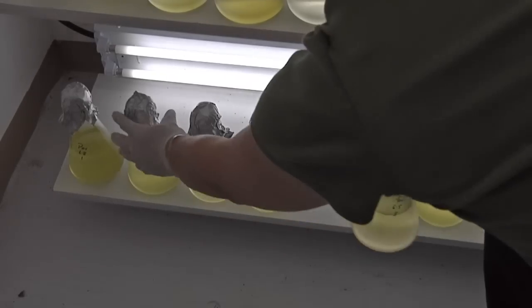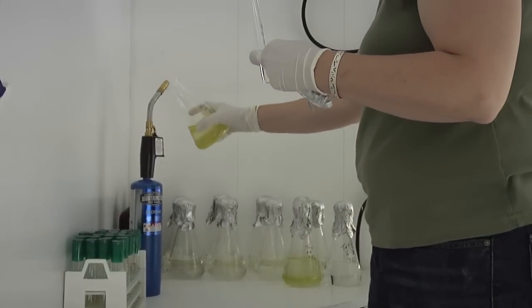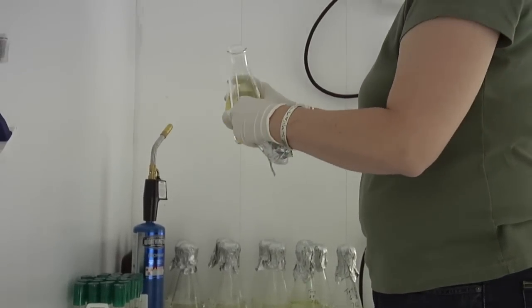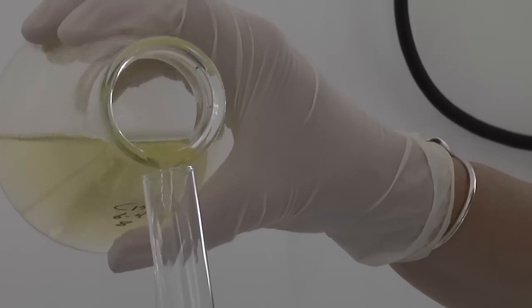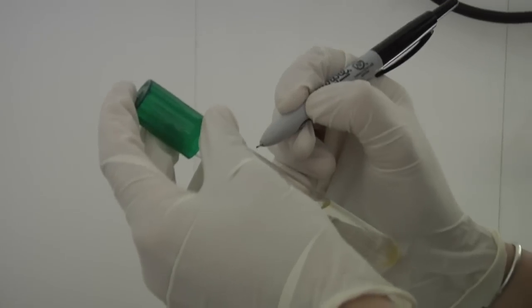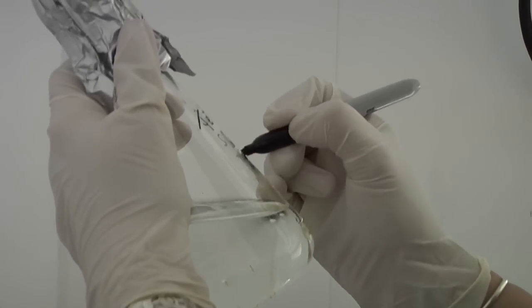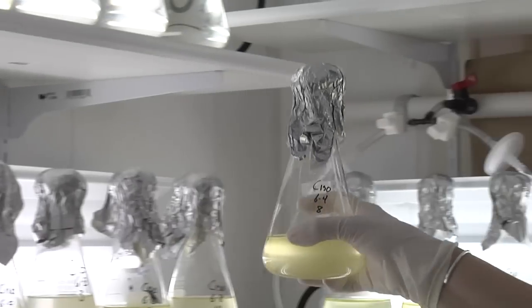At the same time, whenever we do a transfer, we take a few drops and put them into a growth medium that will test to see if there's any bacteria in the sample. All of the samples are labeled with the same labeling system as the flasks so we can track how each sample is doing.